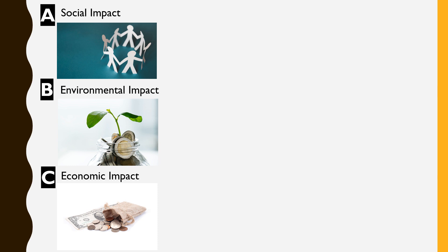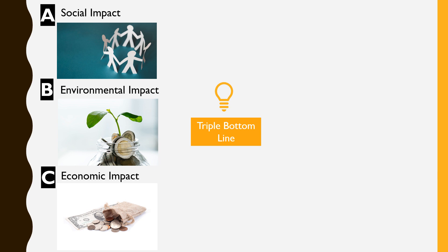So a social enterprise and an enterprise are almost similar, but in terms of social and environmental impact, it's slightly different compared to a normal enterprise. These three impacts that a social enterprise brings are summed up as the triple bottom line — the social impact, environmental impact, and economic impact.